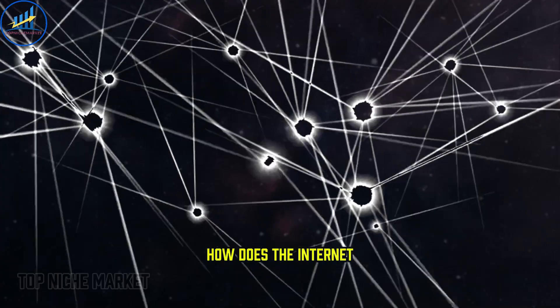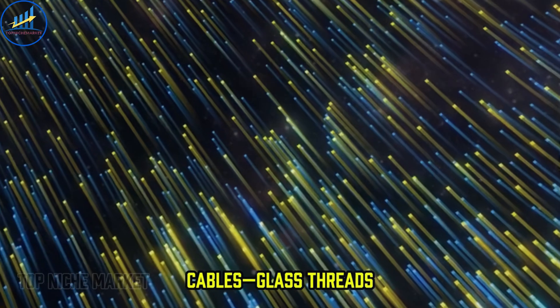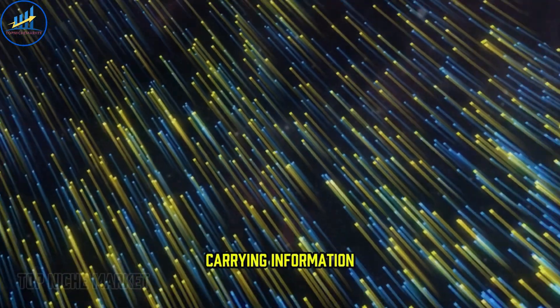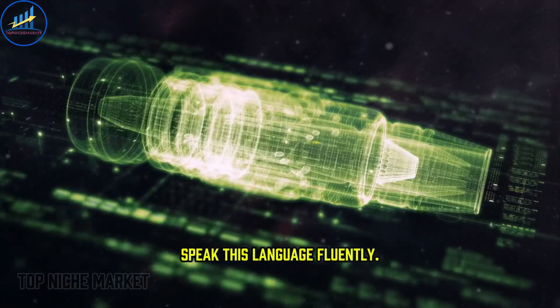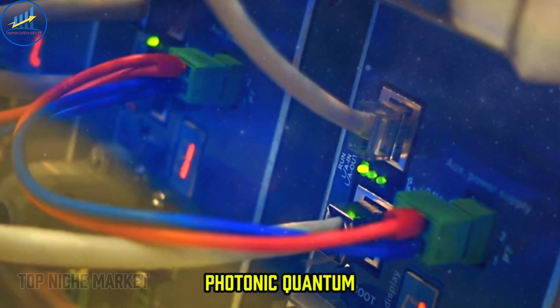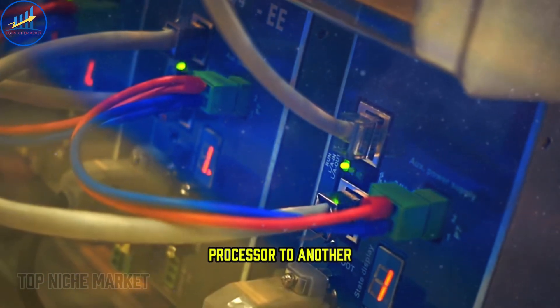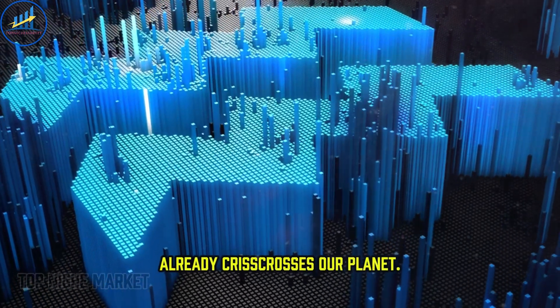But the real masterstroke of using photons is their native ability to network. How does the internet get to your house? For most of us, it's through fiber optic cables, glass threads carrying information encoded as pulses of light. Photonic quantum computers speak this language fluently. You can connect one photonic quantum processor to another using the exact same off the shelf fiber optic technology that already crisscrosses our planet.